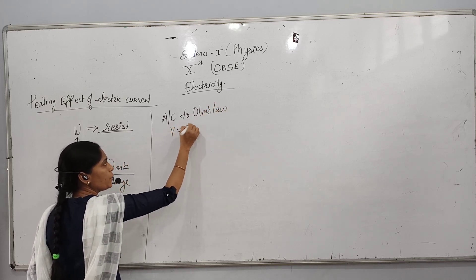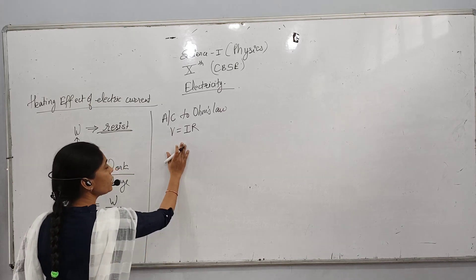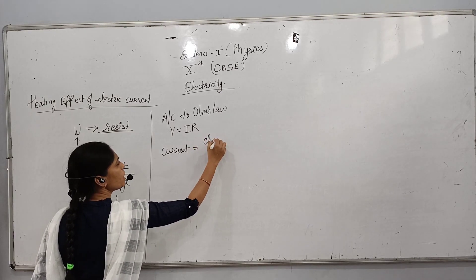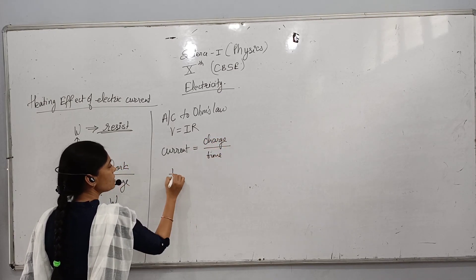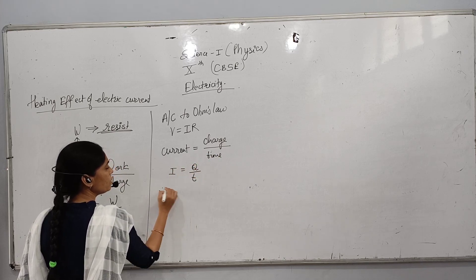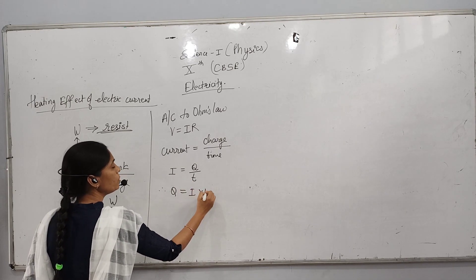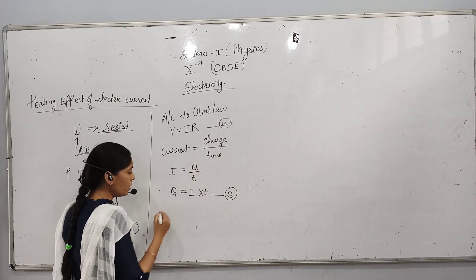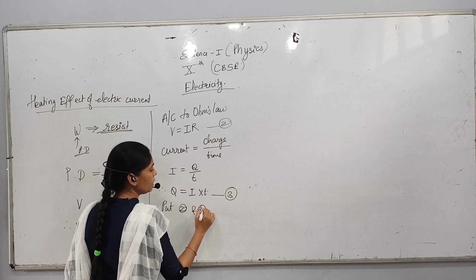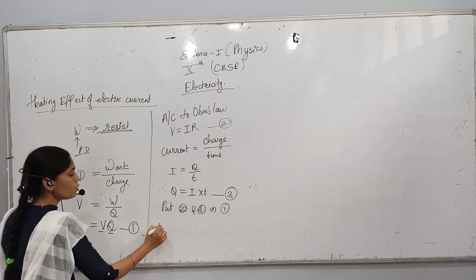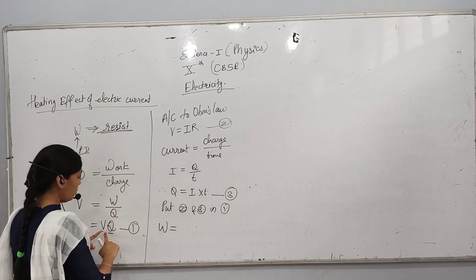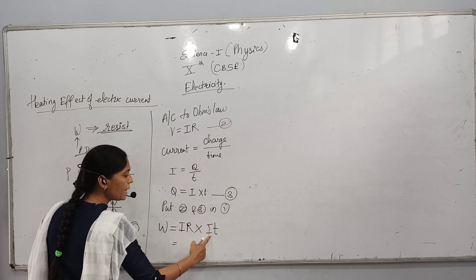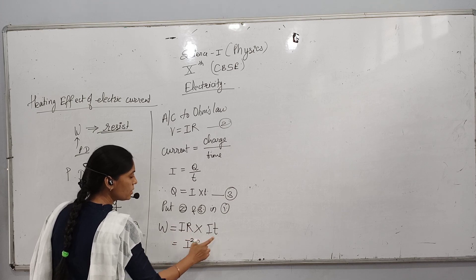Now let us substitute V and Q from equations 2 and 3 into equation 1. W is equal to V into Q. Substituting V = IR and Q = IT: W equals IR multiplied by IT, which gives I into I into R, so W equals I squared R T.